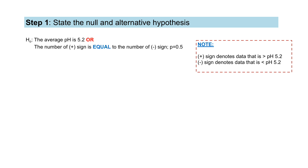The null hypothesis can be written as: the average pH is 5.2, or the number of positive signs is equal to the number of negative signs. The value given for reference is 5.2, meaning we need to find how many of the 16 data values are more than 5.2 and how many are less than 5.2. Since the null hypothesis states there is no difference, the number of positive signs is 8 and the number of negative signs is also 8, since the total is 16.